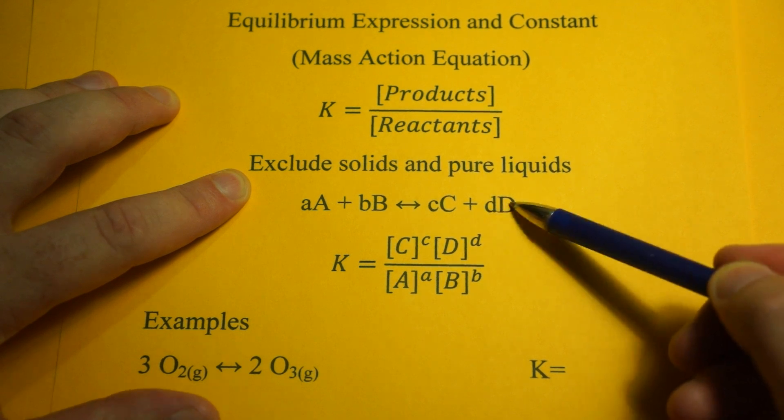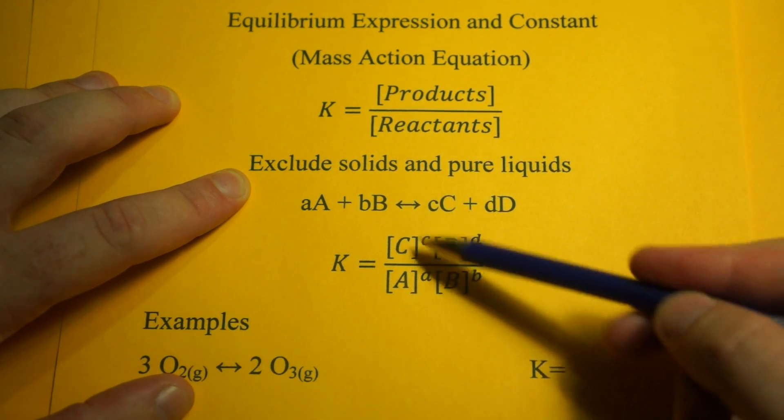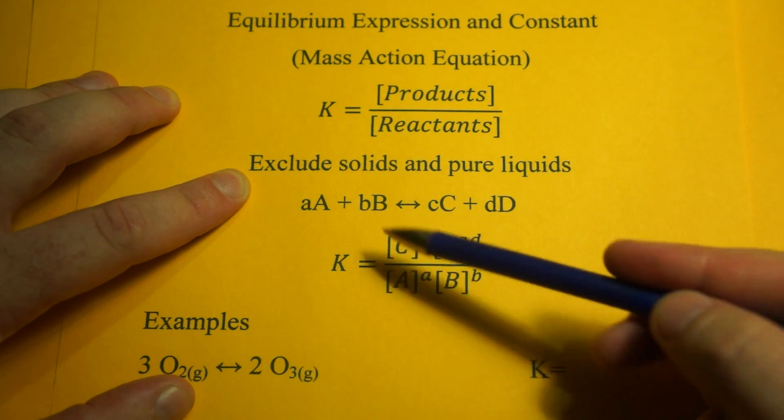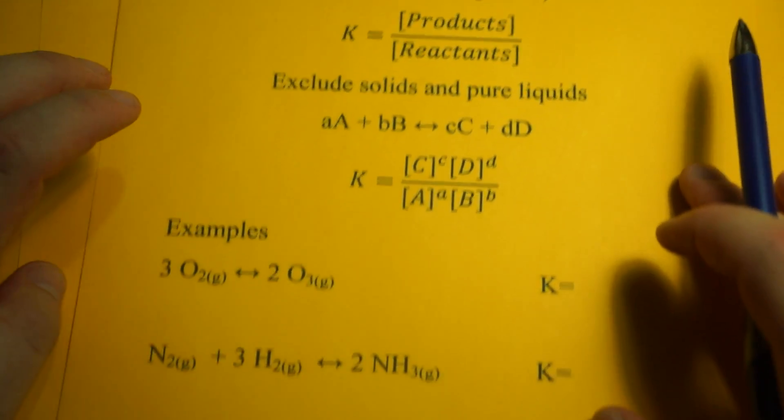Let's say there's a 3 for the lowercase d, so D to the third power. Then the reactants would be in the denominator, and the coefficients would be their power. Let's go over a few examples.